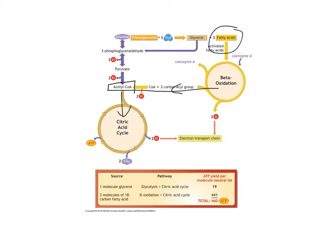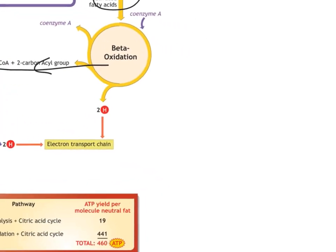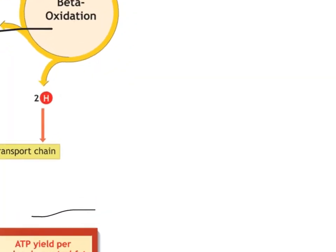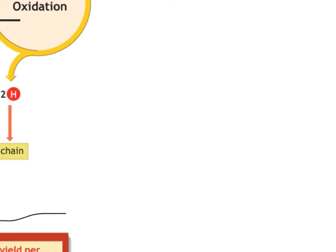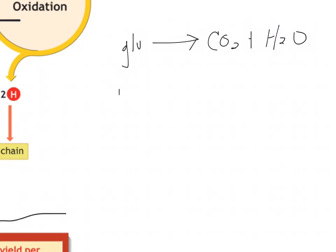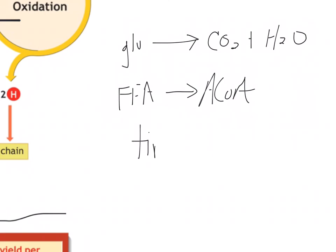This concludes the energy systems overview. Before our first class meeting, think about: where does ATP come from when glucose is converted to CO2 and water? How do free fatty acids link up with acetyl-CoA and the Krebs cycle? And start thinking about how exercise duration and intensity relate to which energy systems are engaged. See you on Wednesday, July 5th.